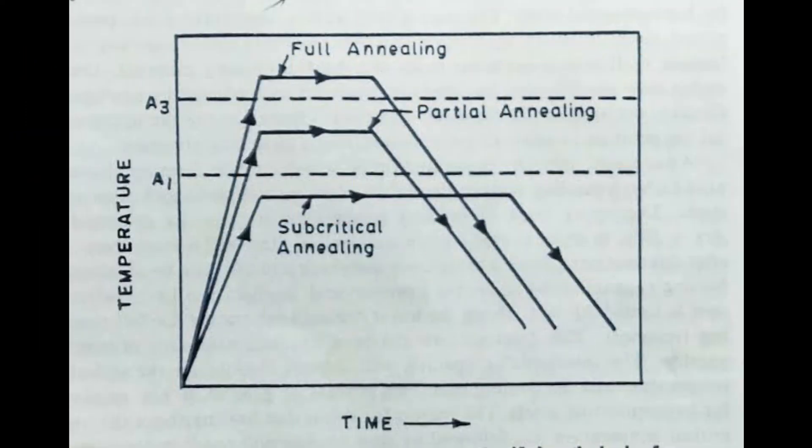What are the types of annealing heat treatment process? Here we generally classify the annealing process in three types. 1. Full annealing. 2. Partial annealing. 3. Subcritical annealing.